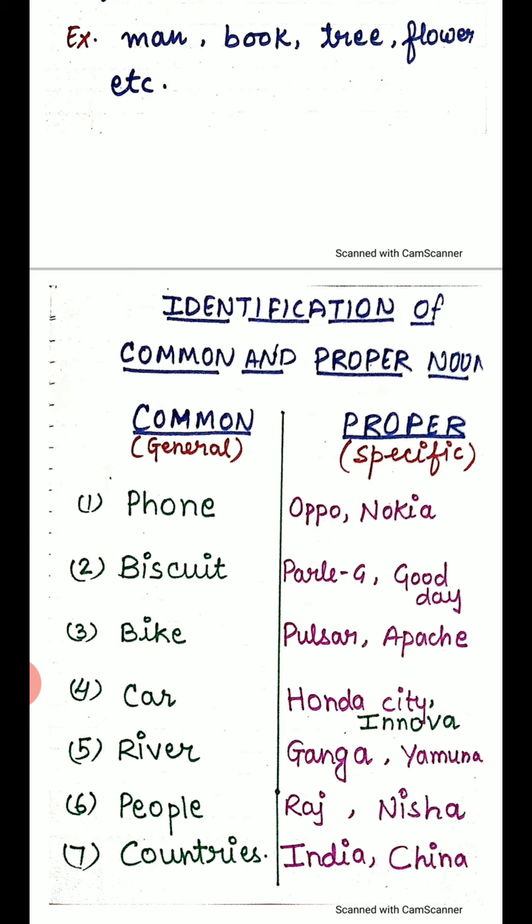For example, biscuit. If your mother tells you to go to the shop and buy a biscuit, the shopkeeper will show you the varieties, because you only said biscuit. But if you say give me a Parle-G biscuit, Good Day biscuit, 20-20, Monaco biscuit, or Vita Marie, then they will give you that specific kind of biscuit.